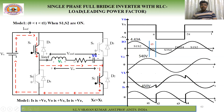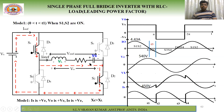Regarding VL and VC polarities: at the start of Mode 1 (t=0), VL is positive and VC is negative. At the end of Mode 1 (t=t1), VL becomes negative and VC becomes positive. These end-of-mode polarities drive the next mode. Source current is positive, v0 is positive, and i0 is positive throughout Mode 1.